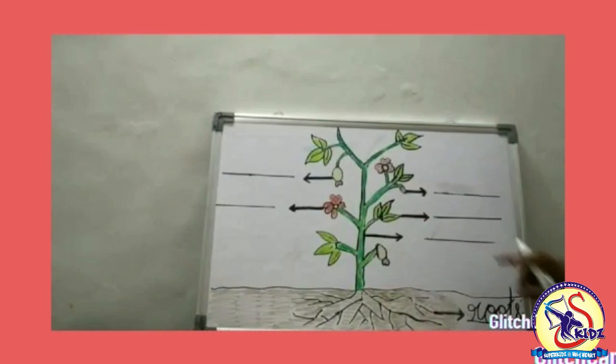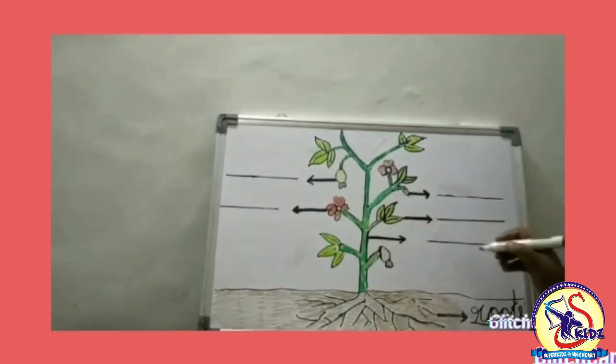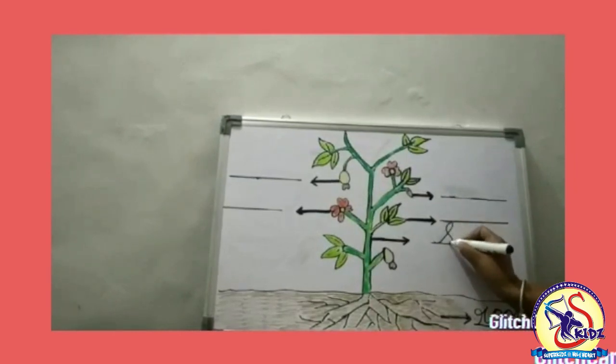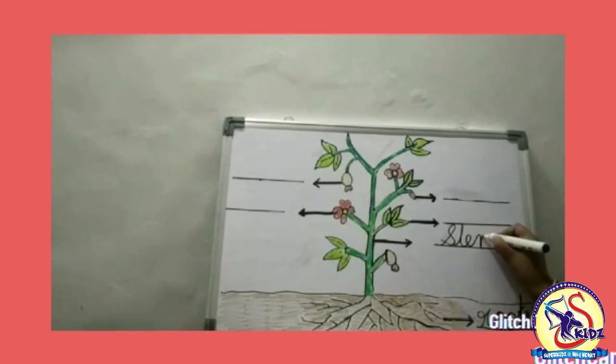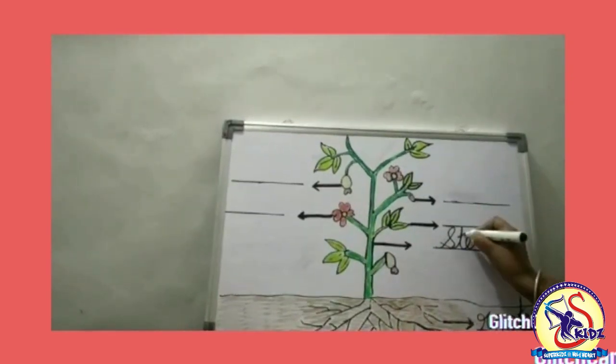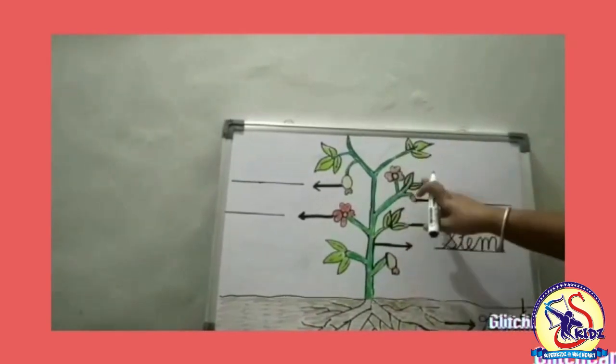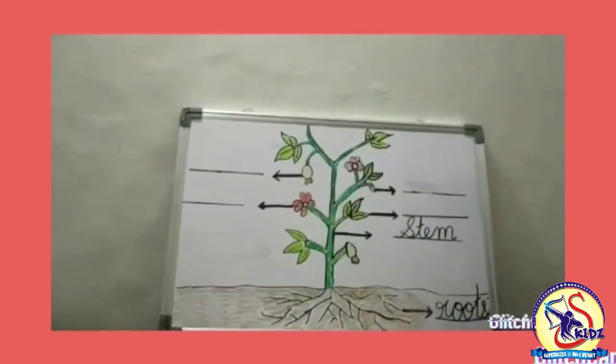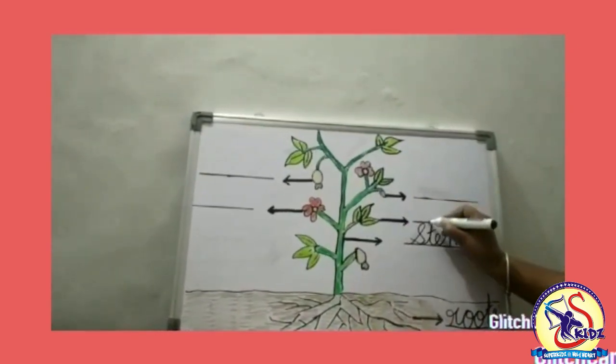Now see the next part. Which part is this? Yes, stem. Spell stem: S-T-E-M. Stem carries water and minerals to every part of a plant.